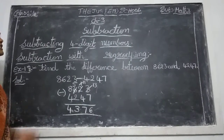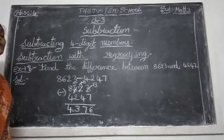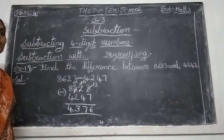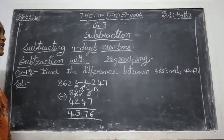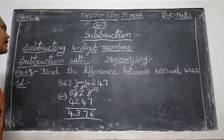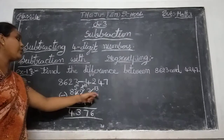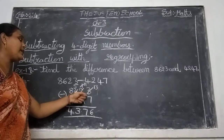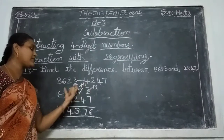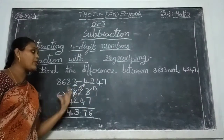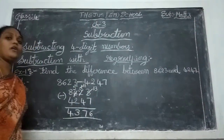This is subtraction with regrouping. You take the borrowings and rewrite the neighboring numbers — that is called the regrouping method.